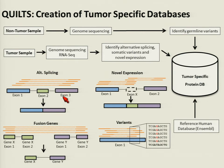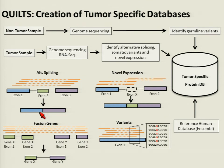These tumor-specific variations include: alternative splicing — specifically novel recombination of two exons through exon skipping; novel expression in which there is expression within an intronic or non-coding region; fusion genes in which parts of one chromosome or two separate chromosomes are fused; and variants, which are single nucleotide changes that can result in single amino acid changes or premature stop codons. All of this is added to our protein database.